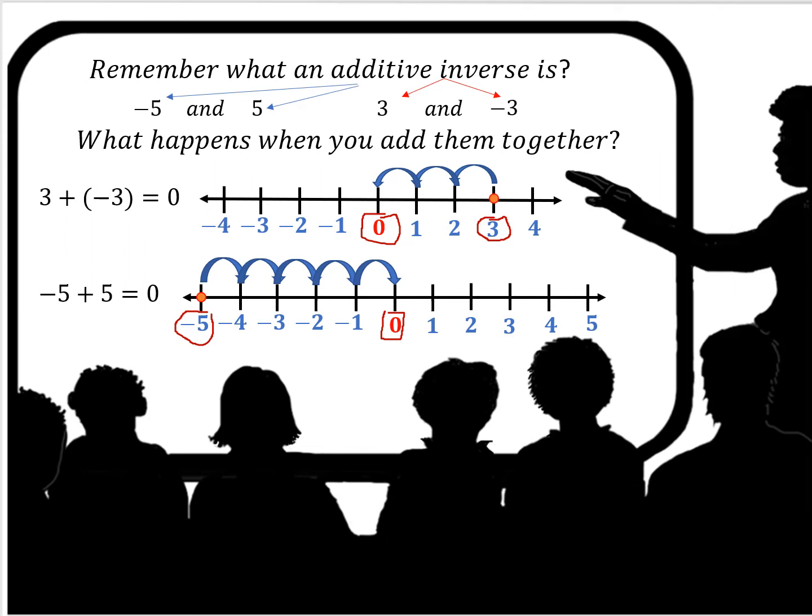So when you add the additive inverse, the inverse to its inverse, so 3 plus negative 3, negative 5 plus 5, 16 plus negative 16, you're always going to get 0.